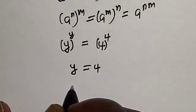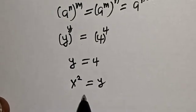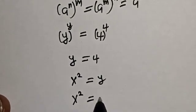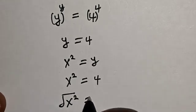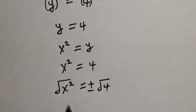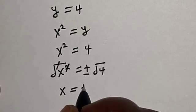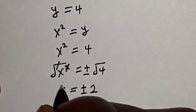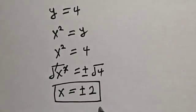By comparing, y is equal to 4. But remember that s squared is equal to y, so s squared is equal to 4. Let's take the square root of both sides — square root of s squared is equal to plus or minus square root of 4. This cancels, so s is equal to plus or minus 2. That is our final answer. Like, share, comment and subscribe. Thank you, bye bye.